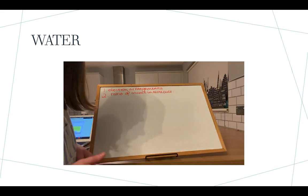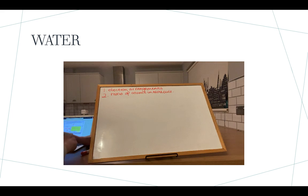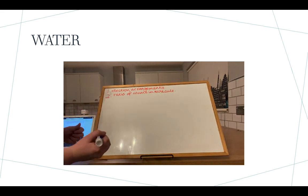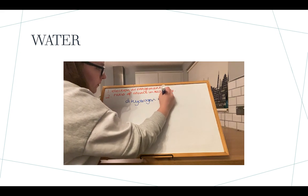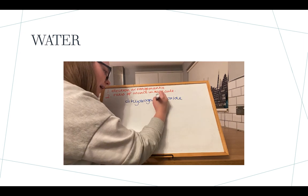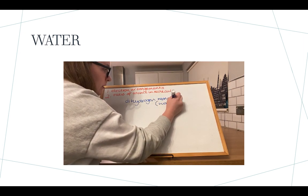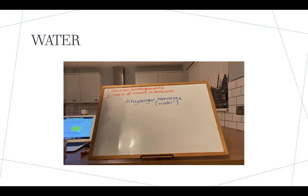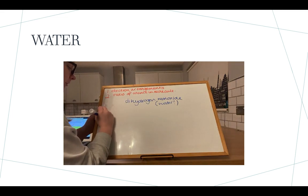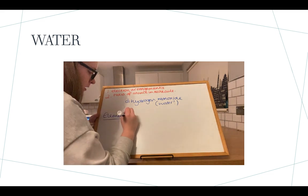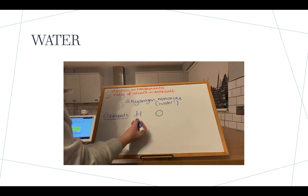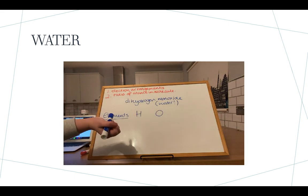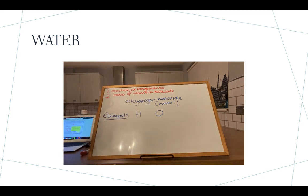This time we are going to do something slightly more complicated — the bonding diagram for dihydrogen monoxide, which you may know as water. Water has the elements hydrogen and oxygen — H for hydrogen, O for oxygen. Remember, the first thing we must do before drawing our bonding diagrams is know the electron arrangements of each element involved. Hydrogen has an electron arrangement of 1 and oxygen has an electron arrangement of 2, 6.